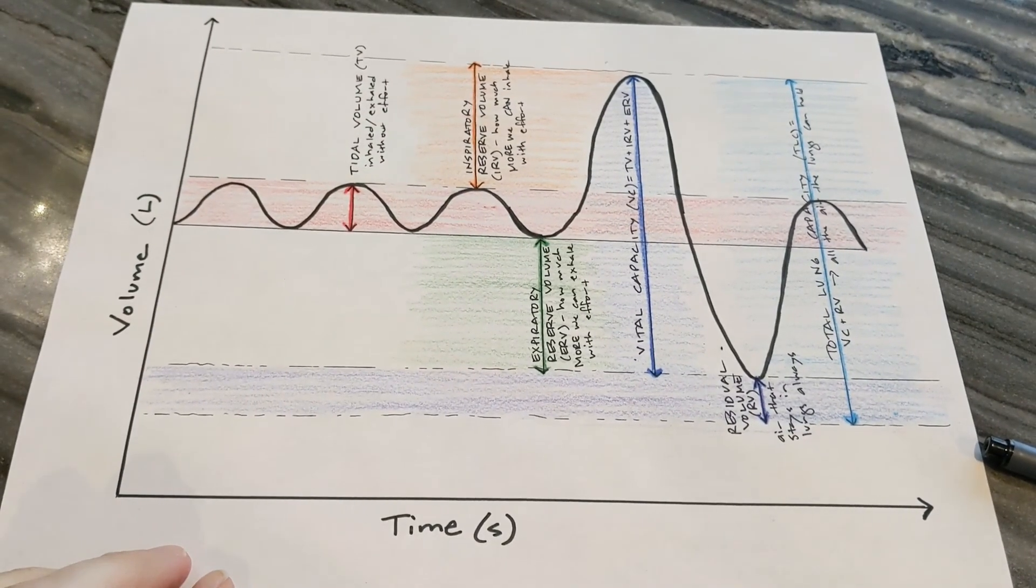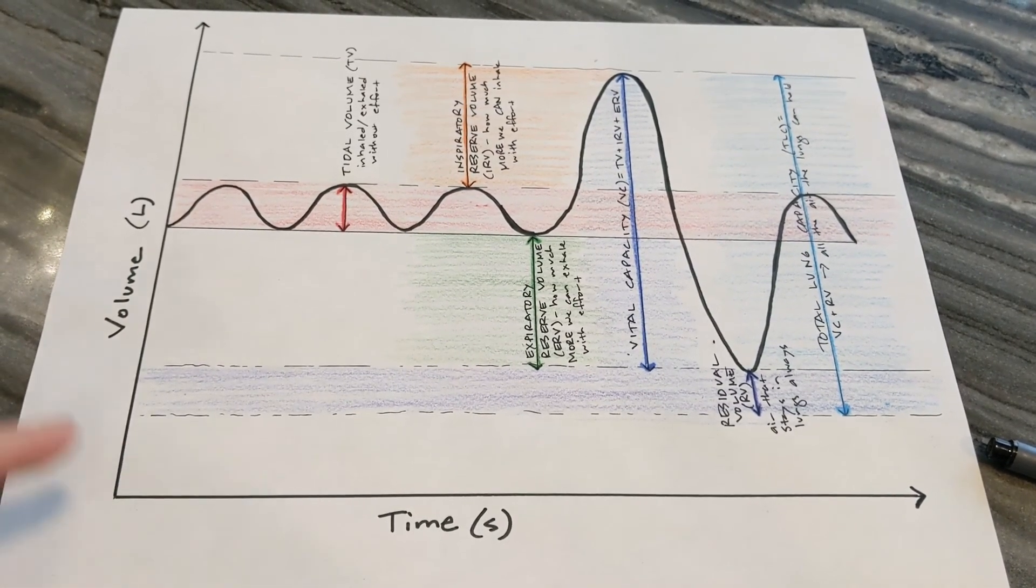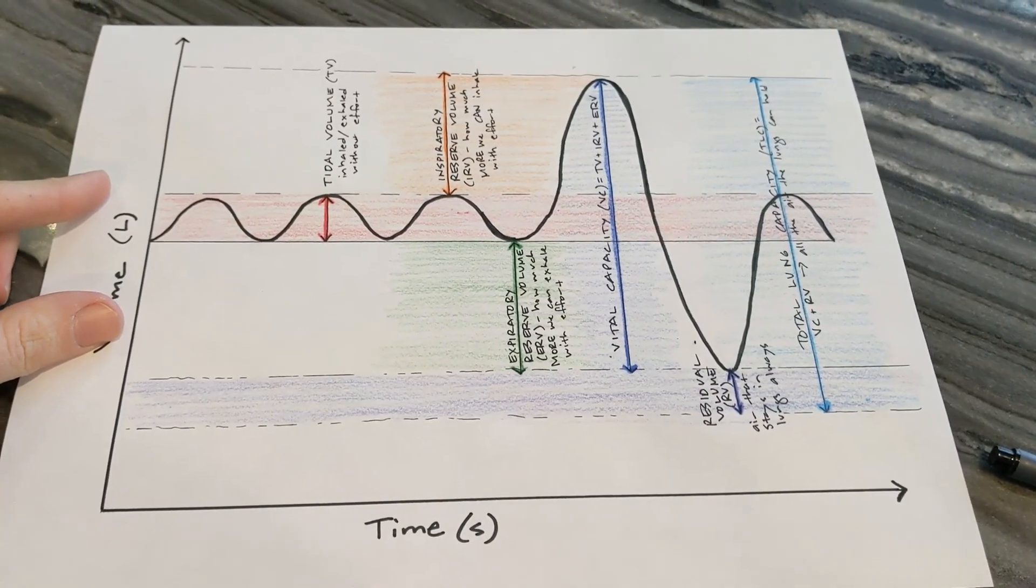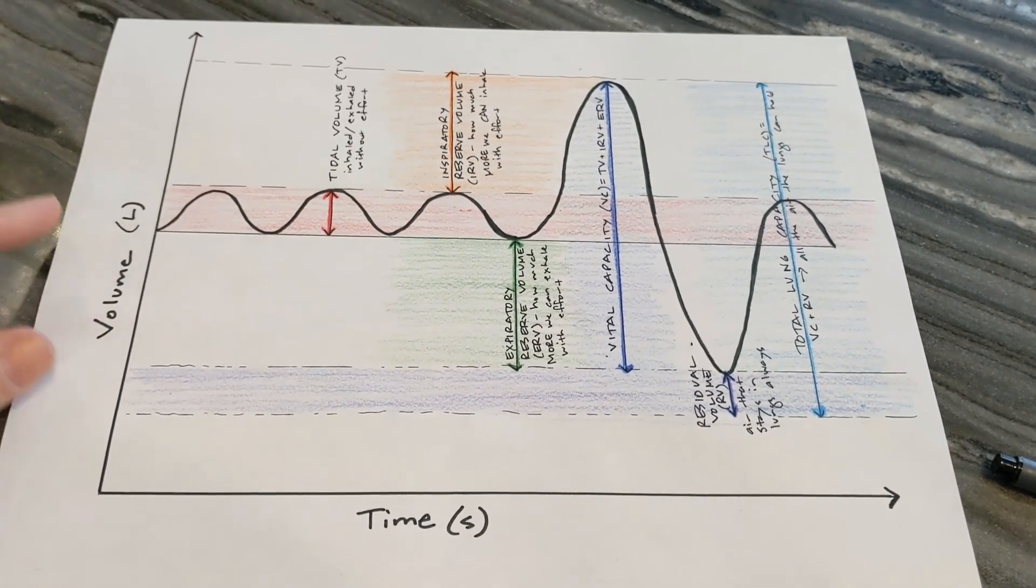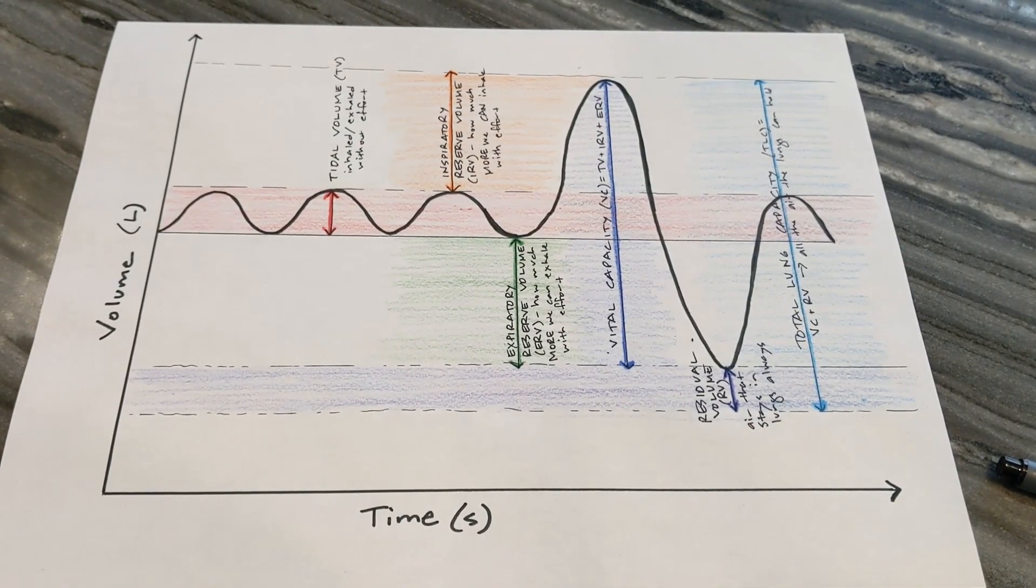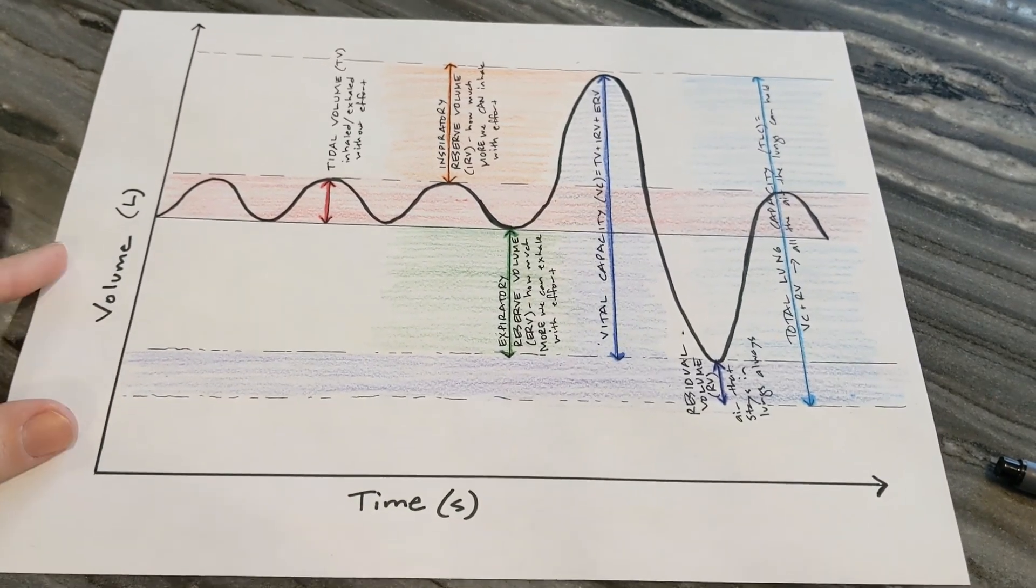Here's my finished graph. My final step was to color in the different waves to show which parts of the graph they represent. I hope this helps you understand spirometry and how we measure lung capacity. If you have any questions at all just drop them in the comments below. Thanks for watching!